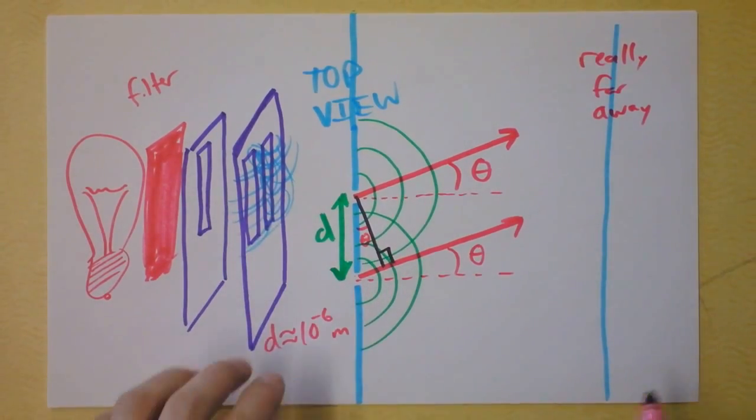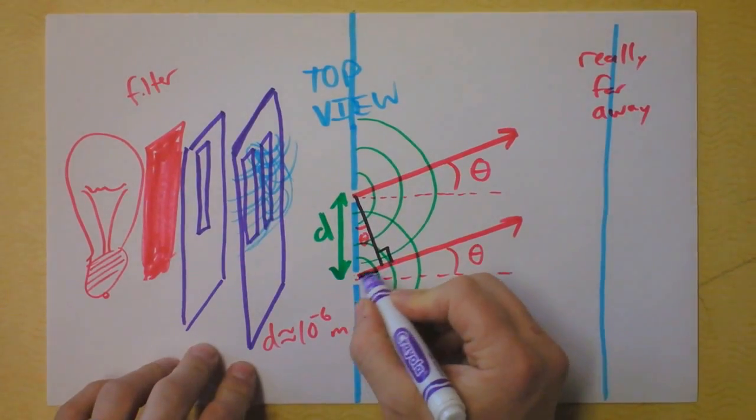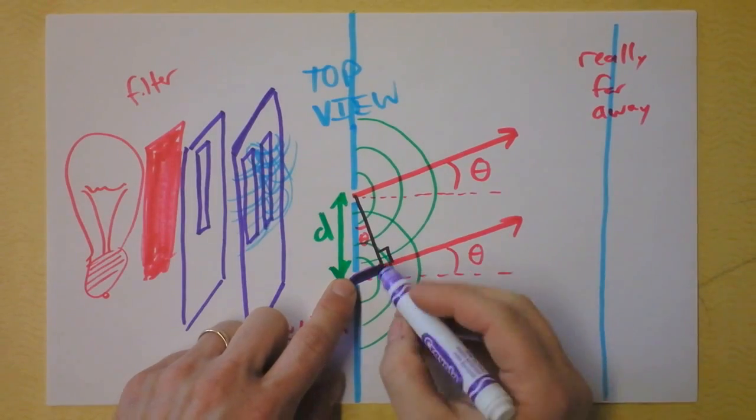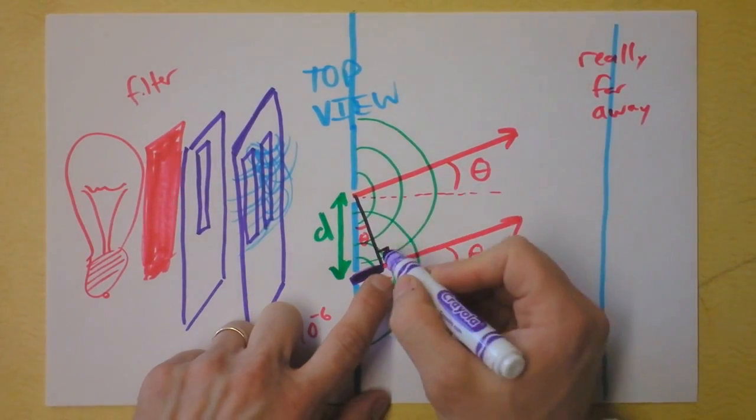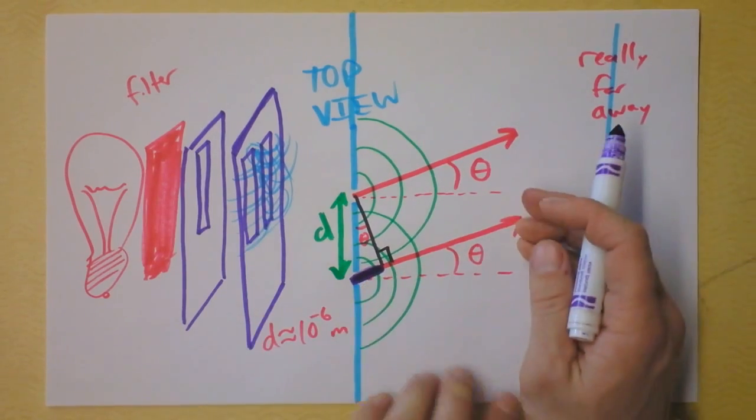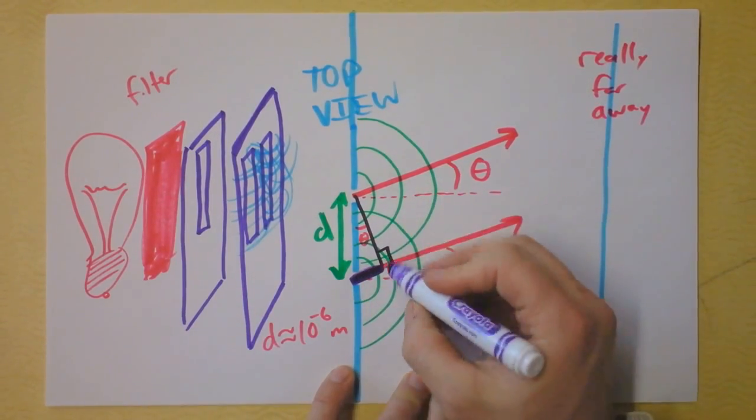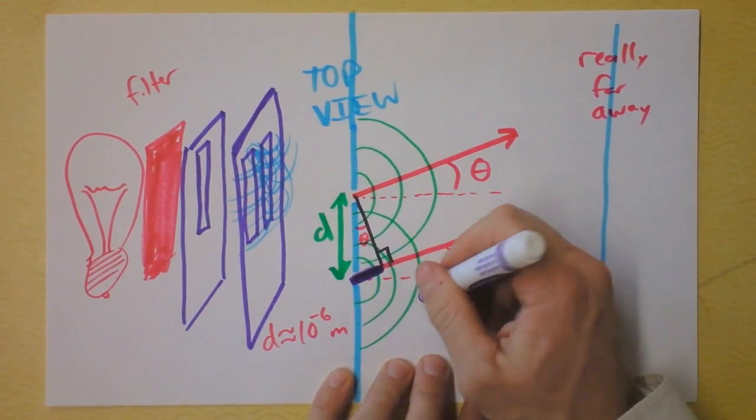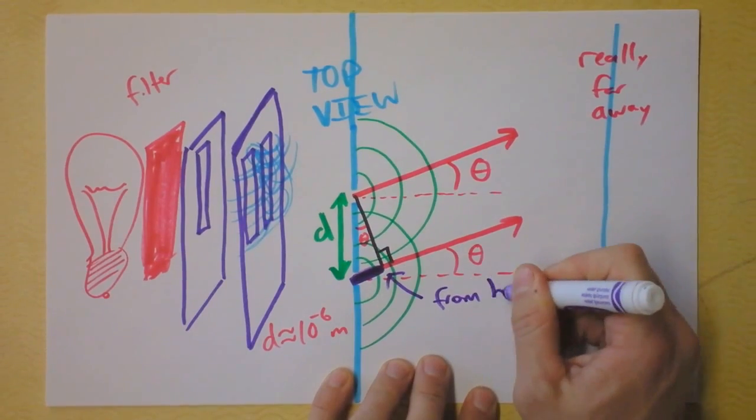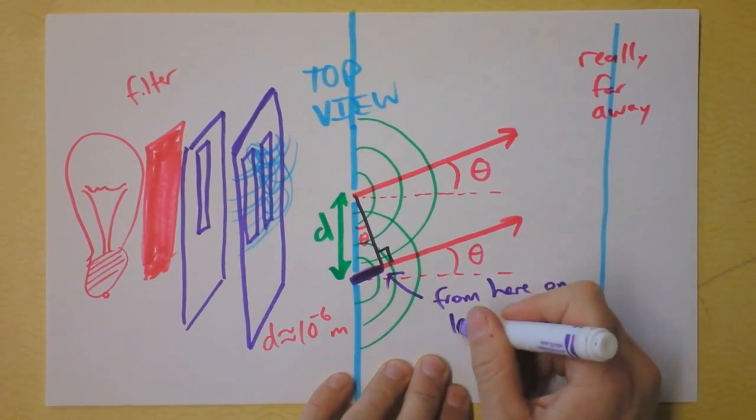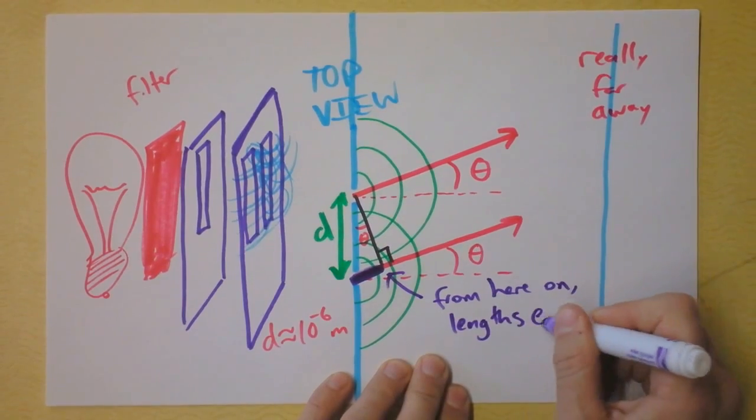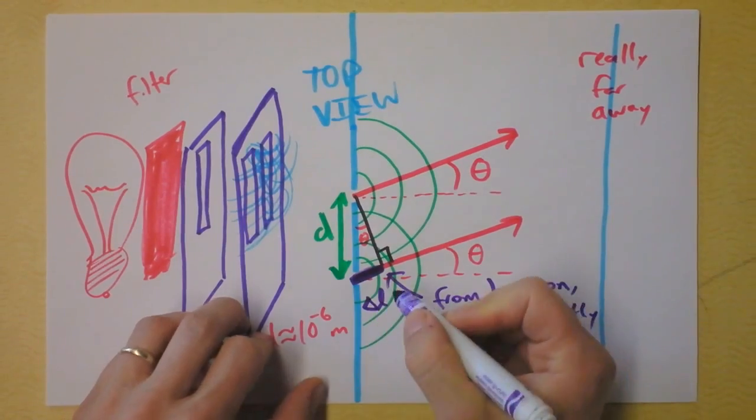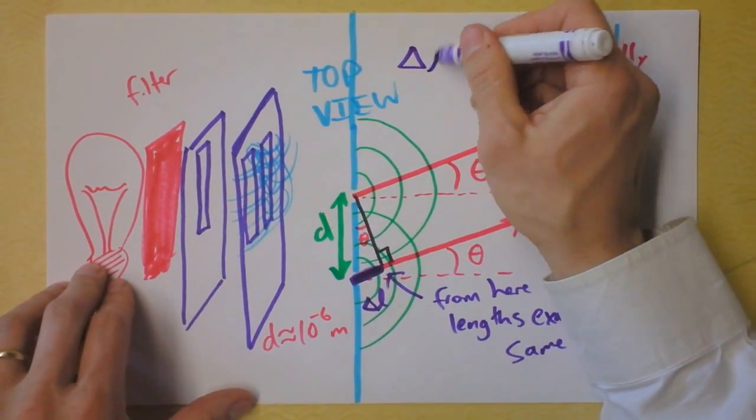The interesting distance for us is this one right here. This distance right here is the additional length that the light from this slit has to travel before it is in line with the other ray. So after this, these guys have exactly the same length that they have to travel to get to the screen. So this is the difference between their two lengths. So I'll put a little arrow here and say, from here on, the lengths are exactly the same. So the difference in lengths is right here. I'm going to call that delta L. Can we define delta L, the path length difference?